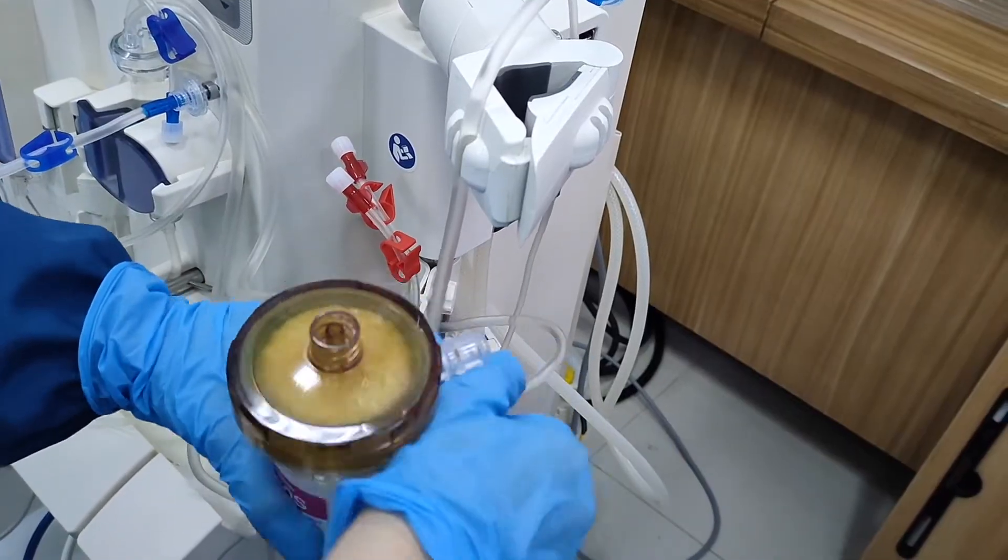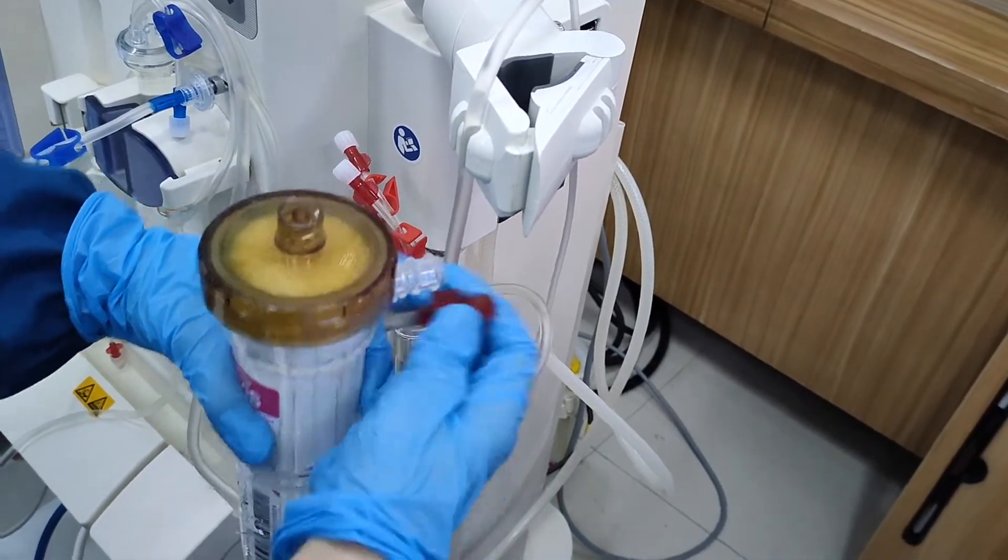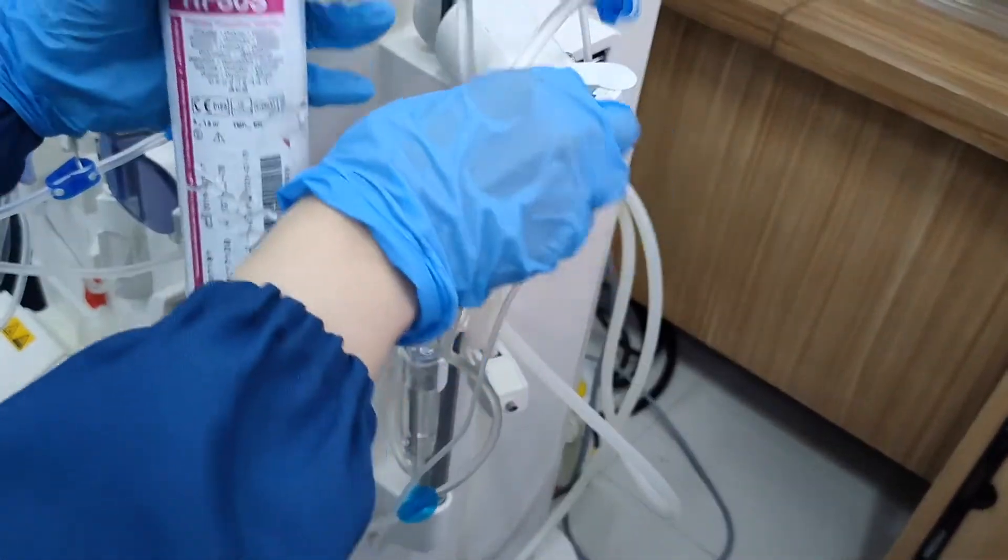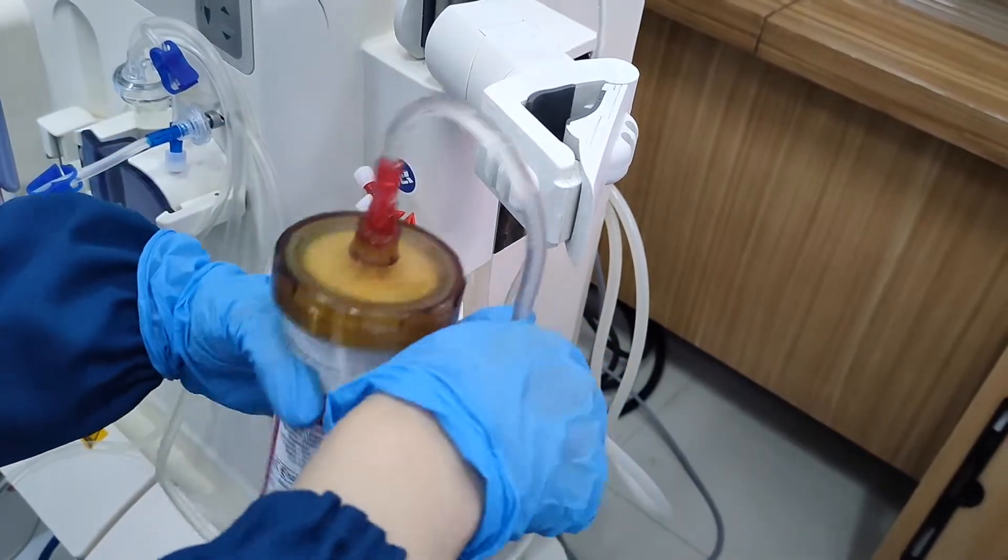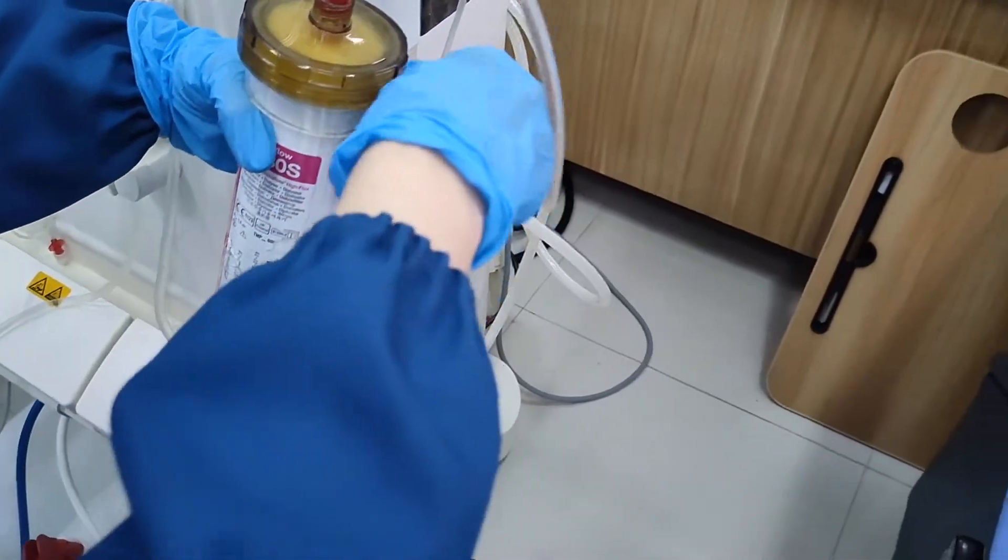Then, take the arterial dialyzer port and connect it on top of the dialyzer. Do the same and connect the venous dialyzer port at the bottom of the dialyzer.